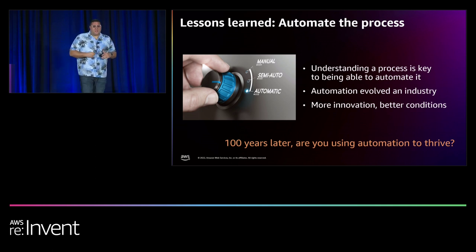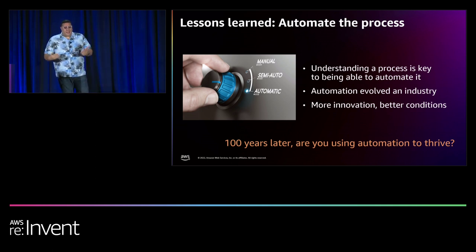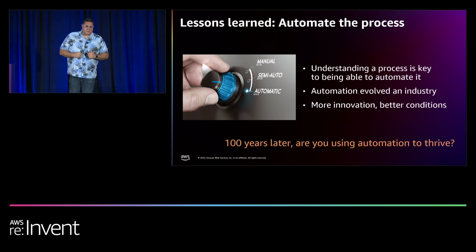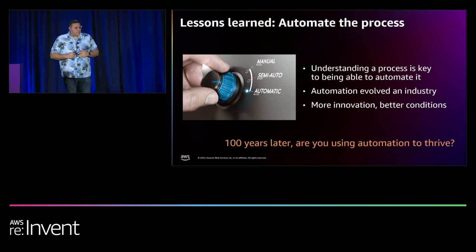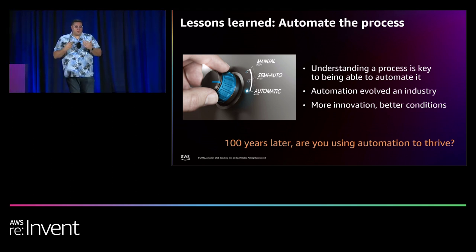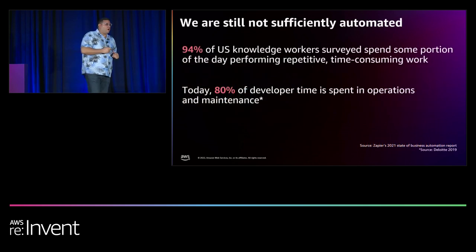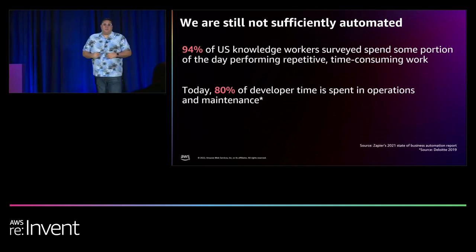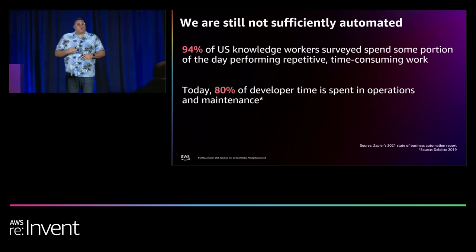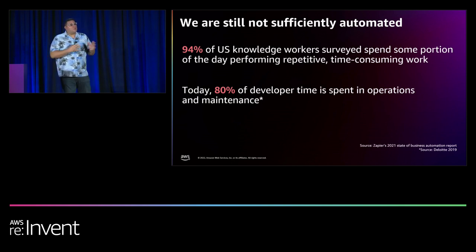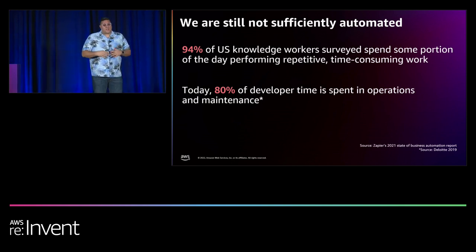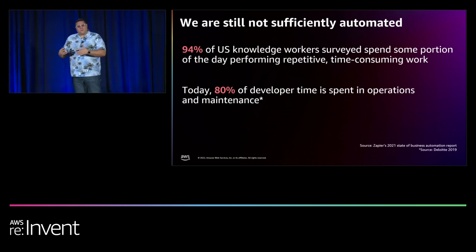Despite being in an industry leading the way with automation, AI, and ML, there are still a lot of manual processes in many organizations. 100 years after Ford moved forward with automation, how are we doing? According to one report, 94% of US knowledge workers surveyed said they spend some portion of their day performing a repetitive, time-consuming task. And according to a Deloitte report, 80% of developers focus on operations and maintenance rather than innovating on behalf of their organization.